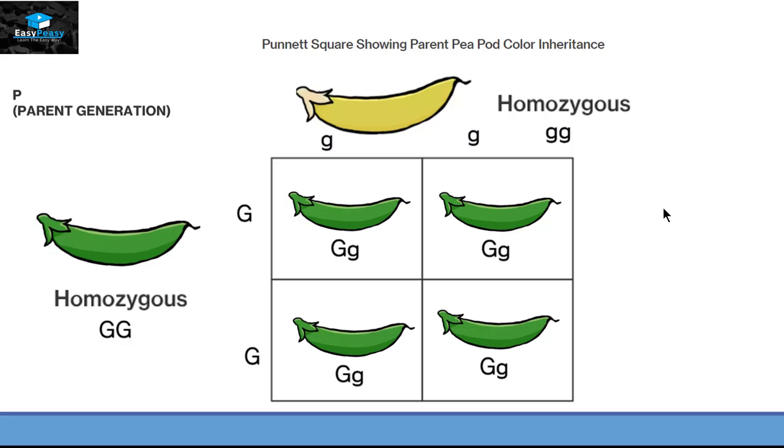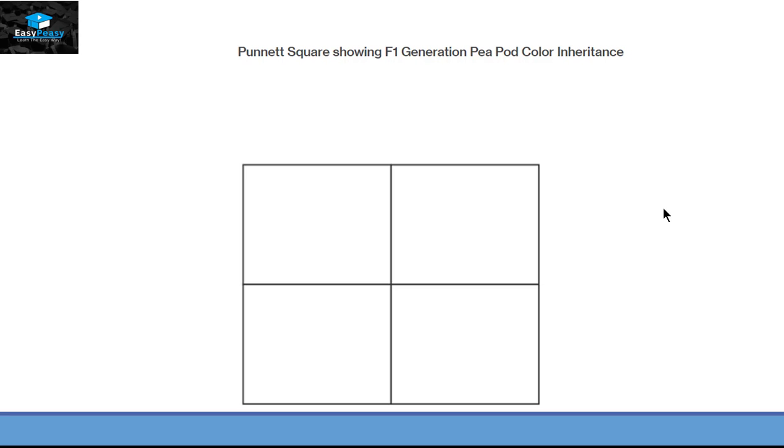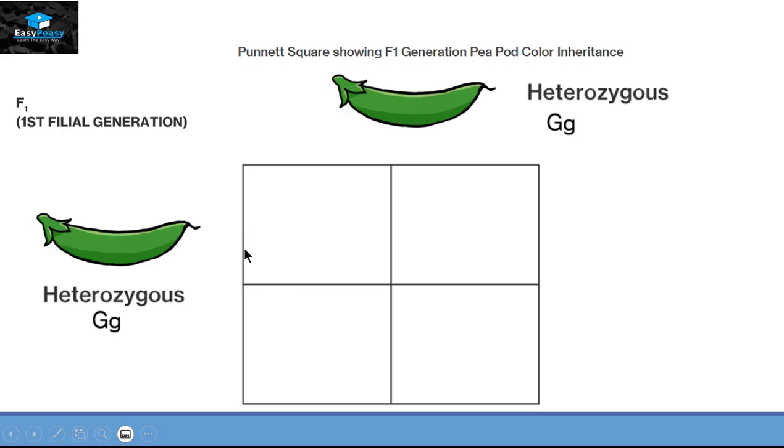Now let's see the F2 generation. The Punnett square for F1 generation pea pod color inheritance is here. F1 generation is a heterozygous generation having capital G and small g as a genotype. We are going to put capital G and small g on each side. The first possible combination is capital G and capital G, that is a true breed green plant. The second combination is small g with capital G, so it will be a heterozygous green plant.